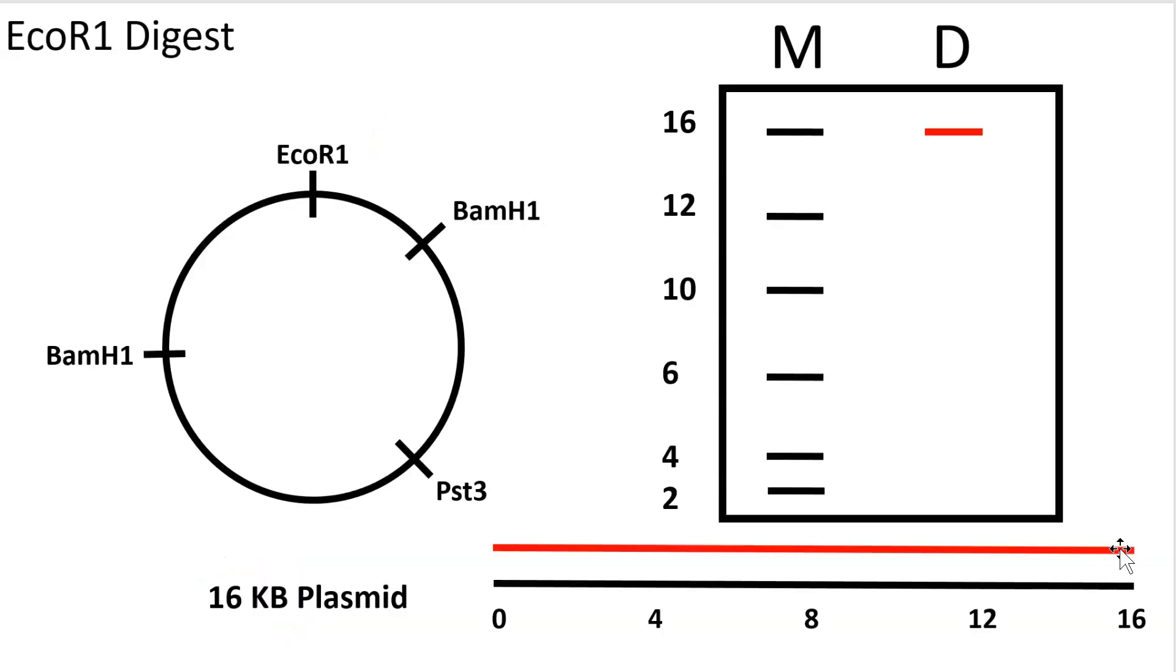On our gel, this one fragment would appear as a 16 KB band. You can see that our band runs the same size as the 16 KB band in our marker. A marker is a standard for size comparison of our bands. So in all of these representations, the marker will be shown here with M, and our digest will be depicted here. So again, in this example, you get one long 16 KB fragment, and that band will appear the same size as the 16 KB marker band.